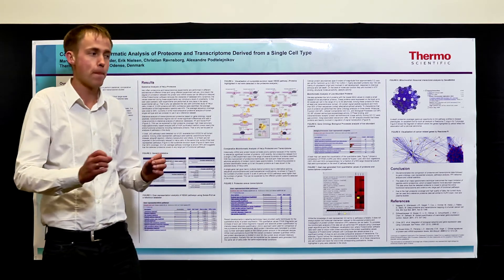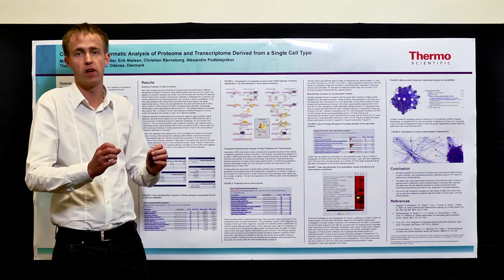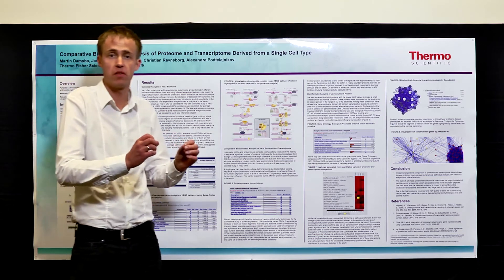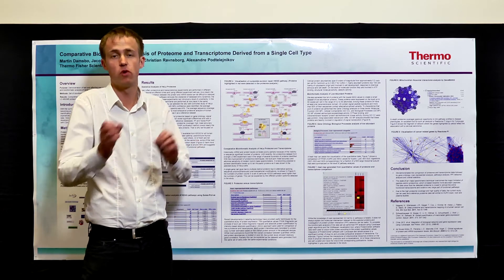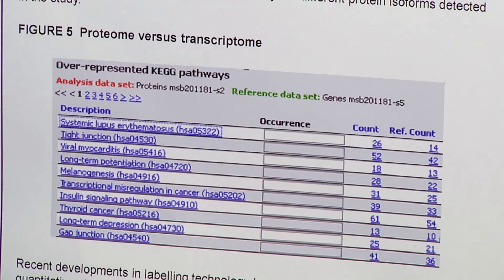There are however more proteins identified in the pathways than transcripts, but that is due to the fact that a protein can persist in many different splice variants and thereby count multiple times, in contrast to a transcript that will only be represented once in the KEGG pathway.